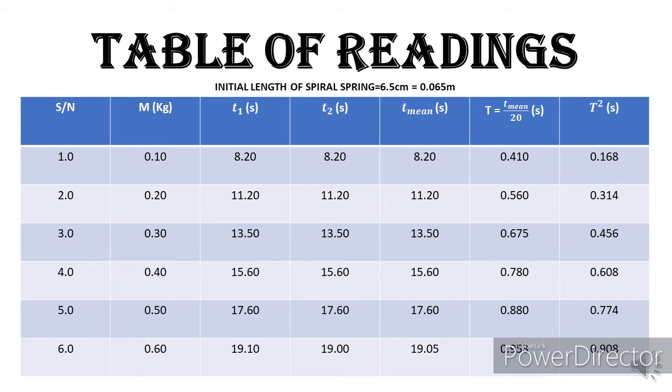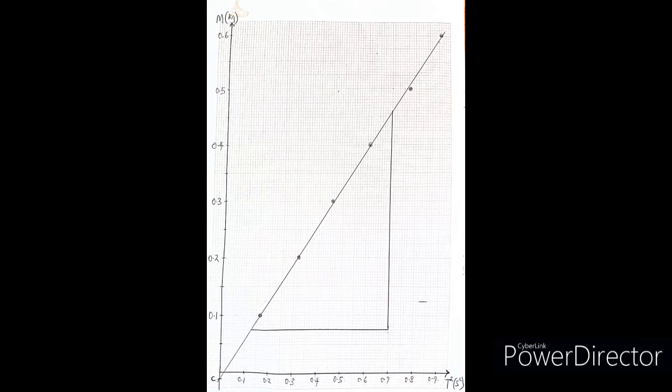The period T is also deduced, and the square of the period is also written on the table there. Now with this, I could be able to plot a graph of m against T². Now if I plot a graph of m against T², this is what my graph will look like.